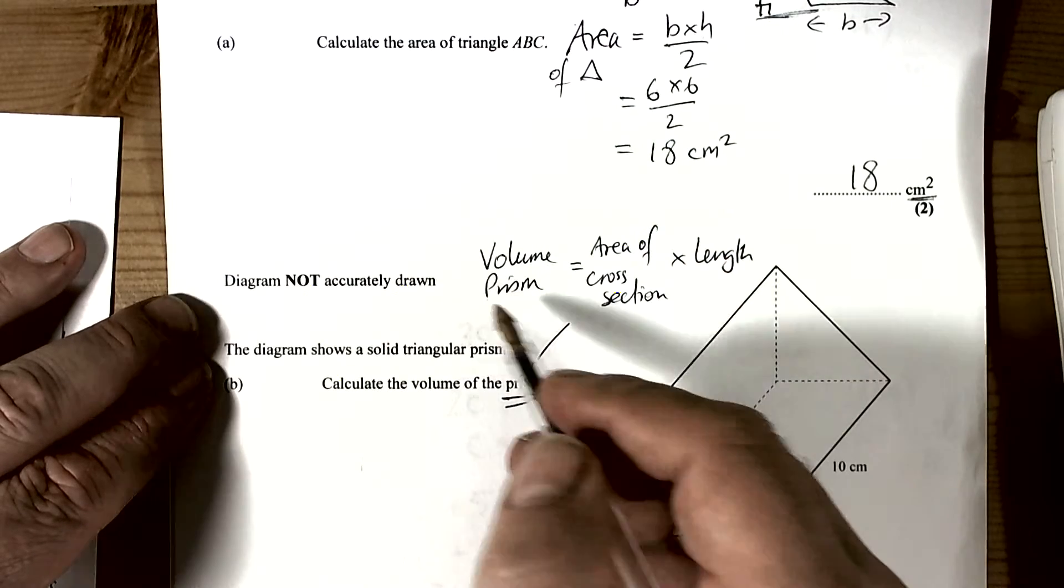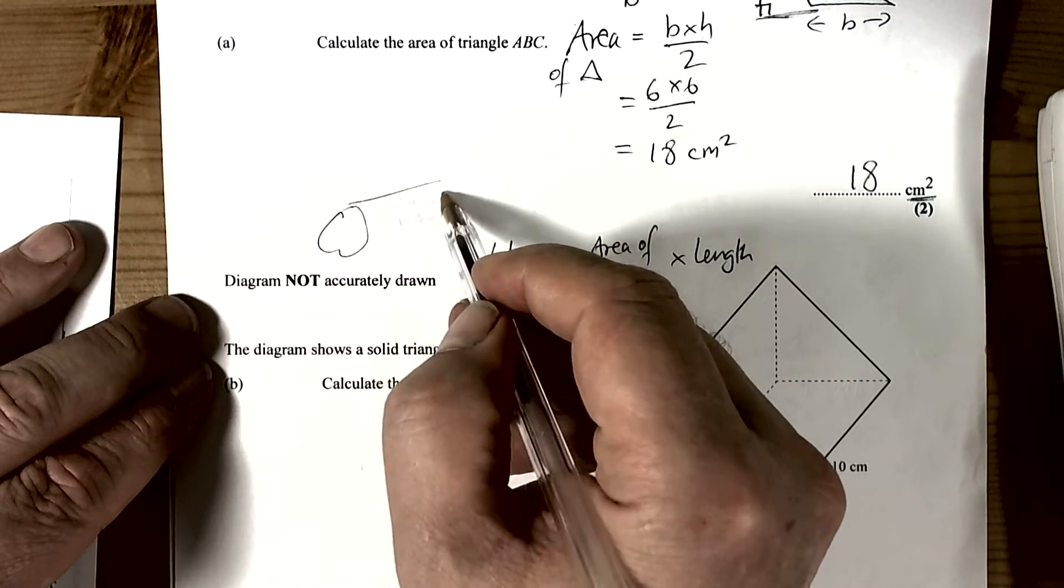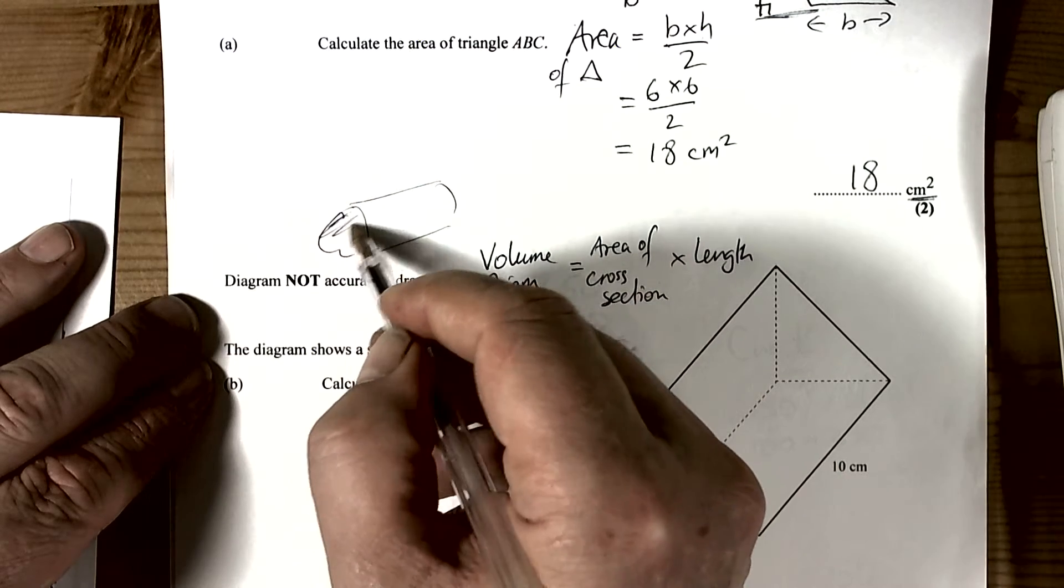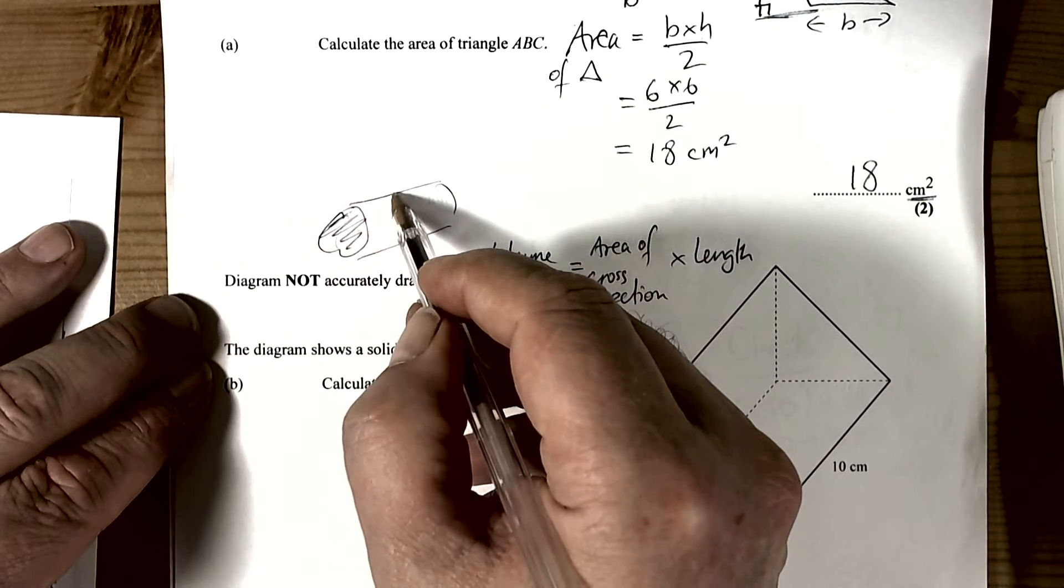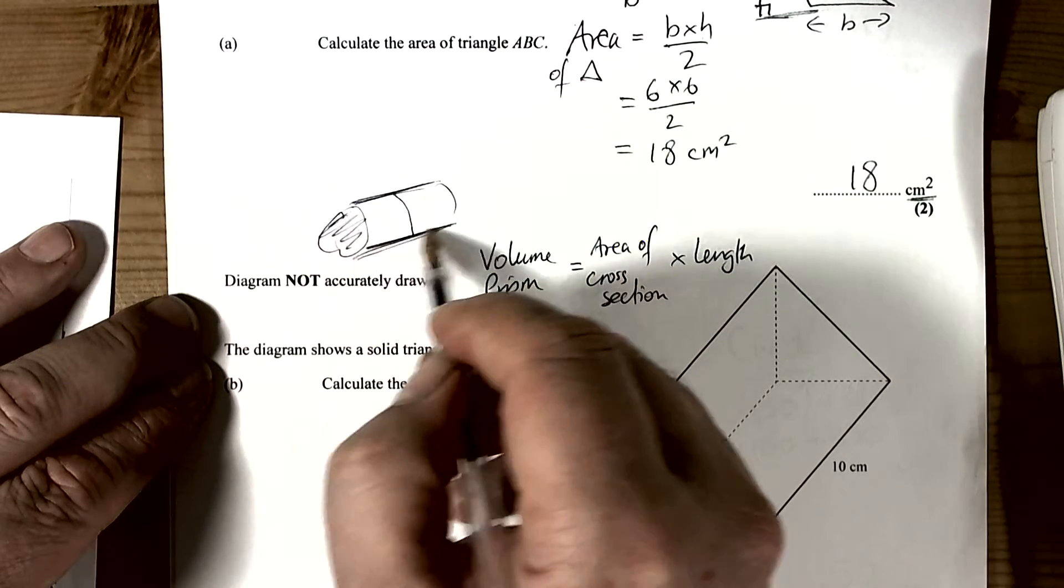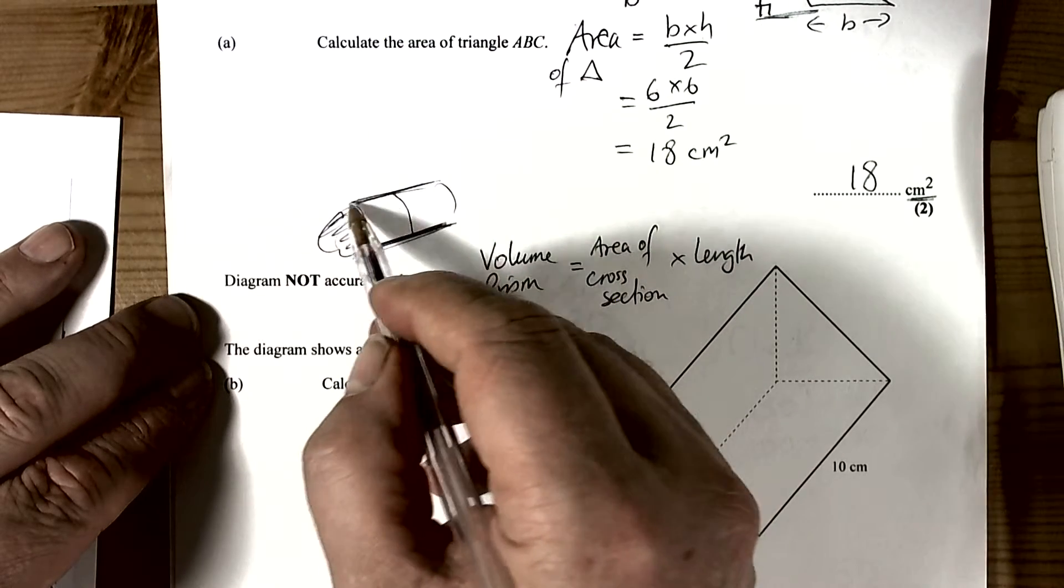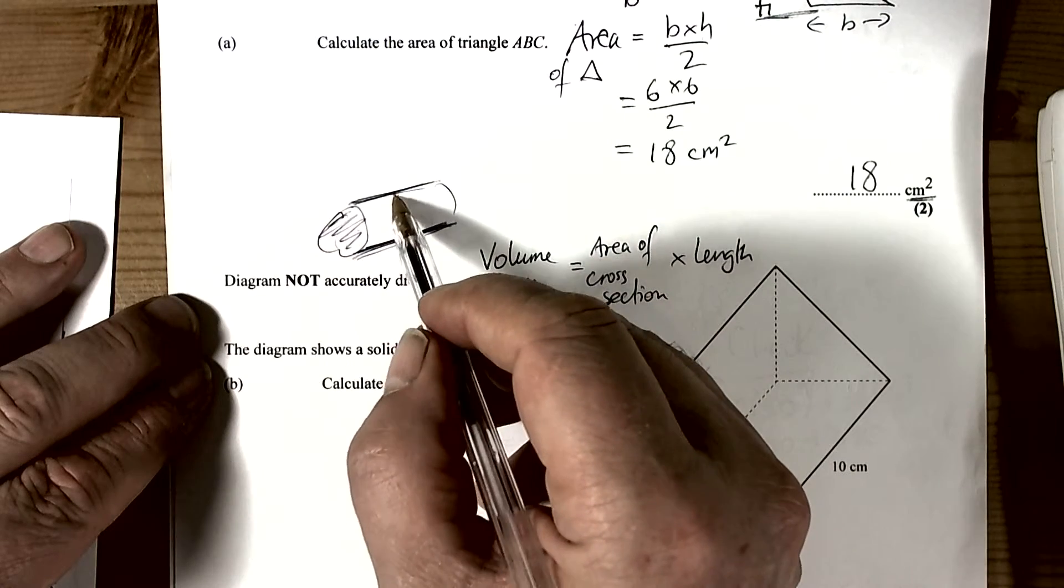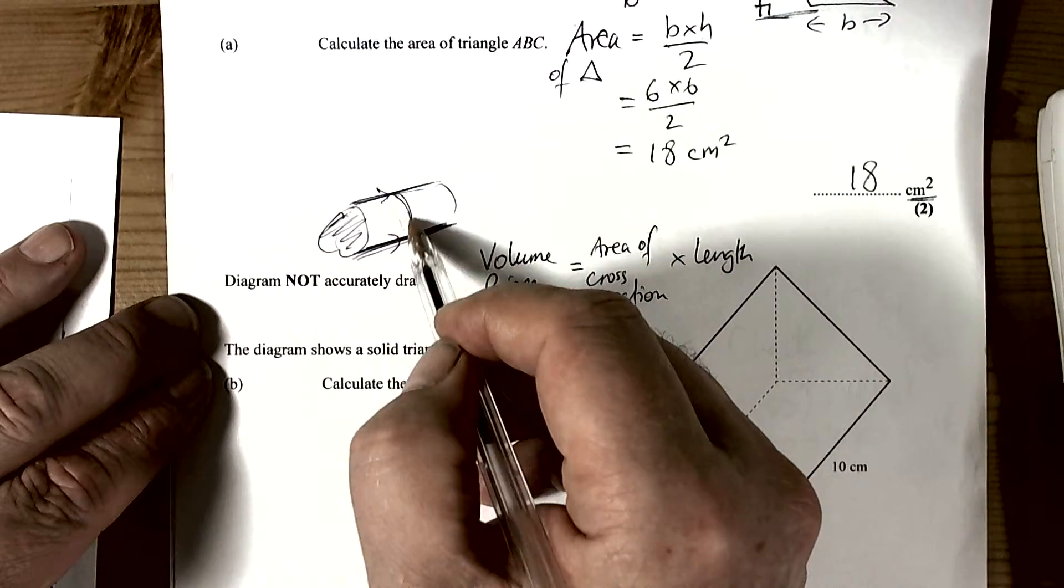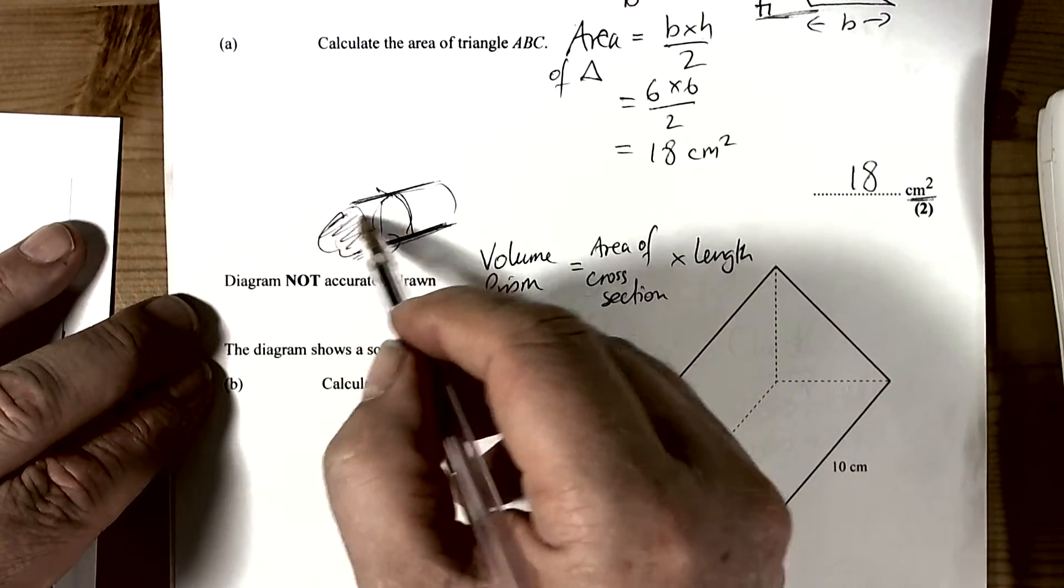Now what we've got to remember about a prism is that a prism is any shape where the same cross section—if you cut it along the parallel edges when you're looking at a 3D image in 2D, and if you cut it along those parallel edges—you'll always see the same shape throughout.